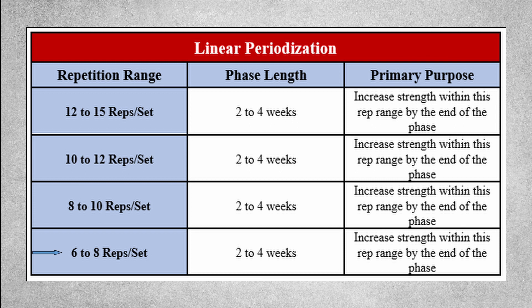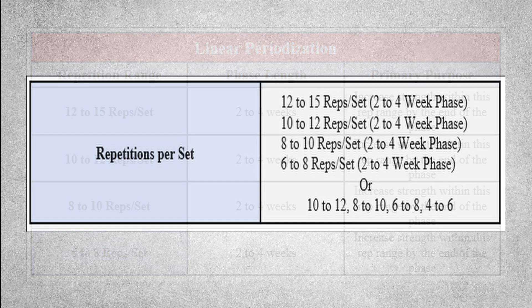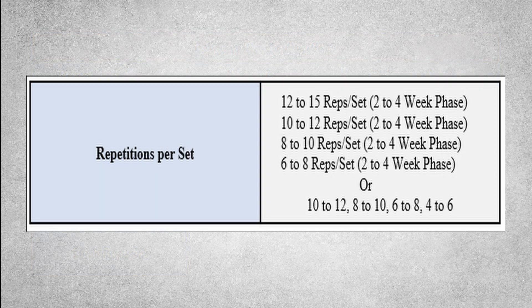For more able-bodied individuals, you could follow that same concept but instead of starting at 12 to 15, you would start at 10 to 12, stay there for a two to four week phase, then drop to 8 to 10, 6 to 8, and 4 to 6. This is known as linear periodization — a nice structured and logical way to progress from lighter weights and higher repetitions to heavier weights and lower repetitions over time, across the 6 to 15 or the 4 to 12 repetition range.